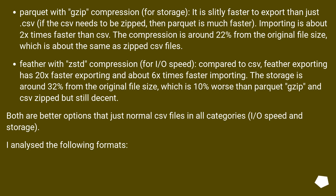Second: Feather with ZSTD compression for IO speed. Compared to CSV, Feather exporting is 20x faster and importing is about 6x faster. Storage is around 32% of the original file size, which is 10% worse than Parquet ZIP and CSV ZIP, but still decent. Both are better options than plain CSV files in all categories: IO speed and storage.